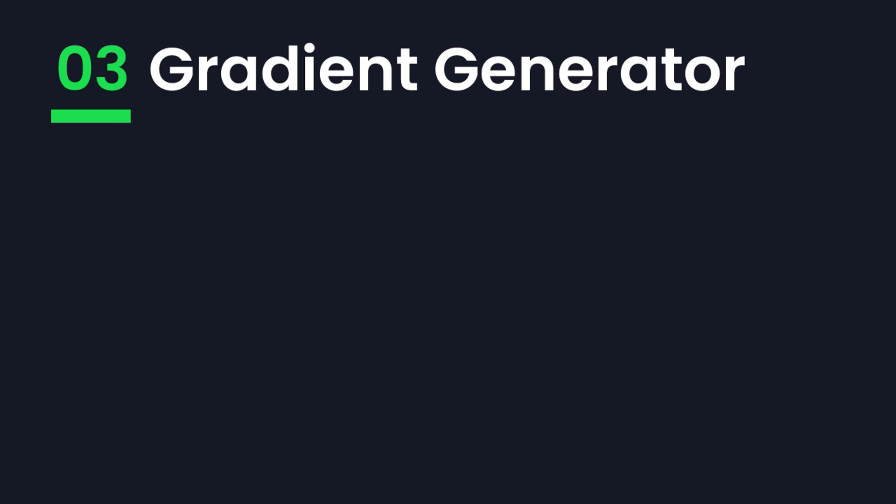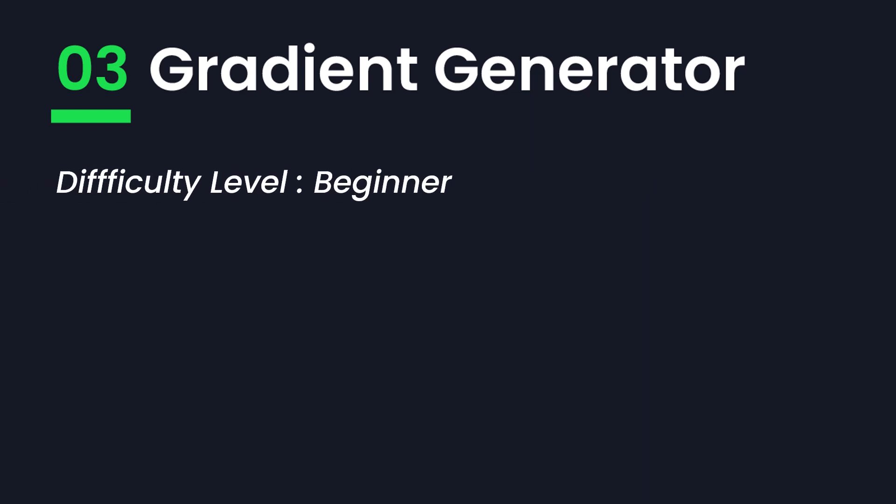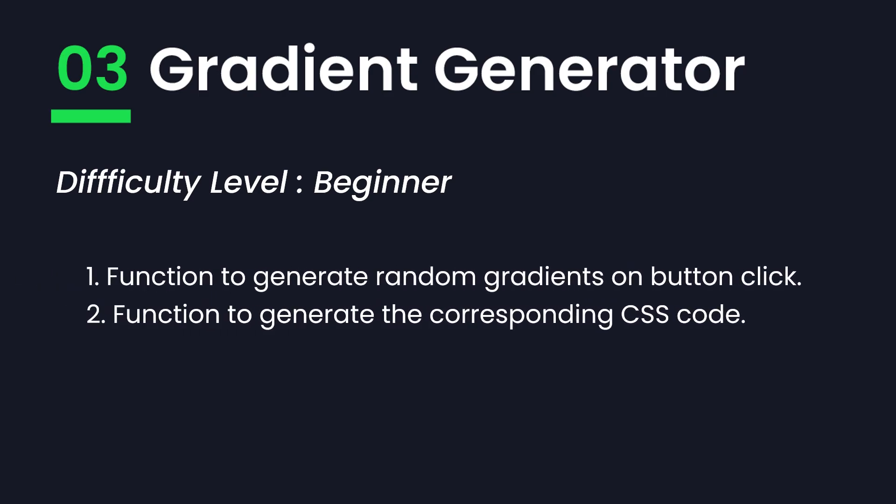Next in this list is a fun project called the gradient generator. In the beginner version of this project, you have to select random colors and an angle and generate a gradient. You also have to implement a function to generate the corresponding CSS code for the gradient.